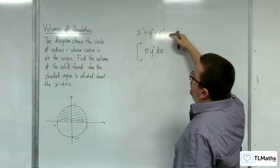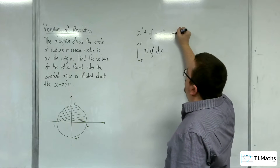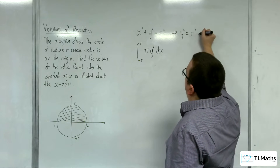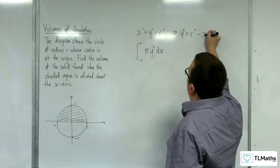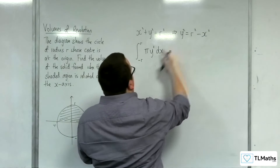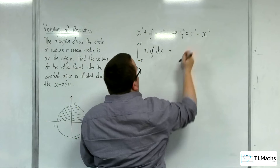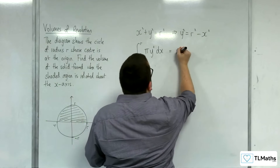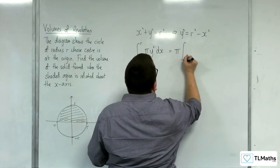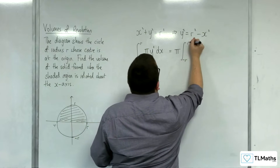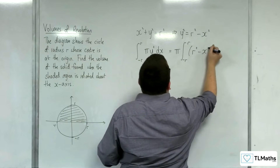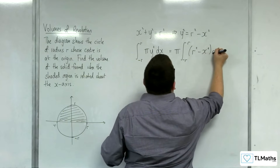We can rearrange the circle equation to get y squared equals r squared minus x squared. Substituting this in for y squared, and factoring out pi, we get pi times the integral of r squared minus x squared dx.